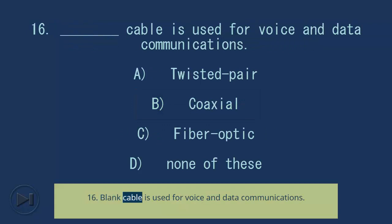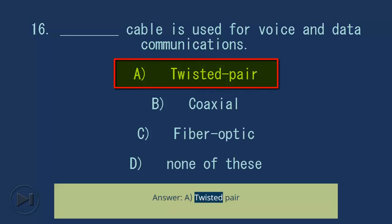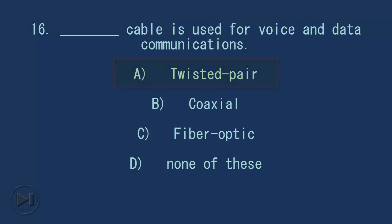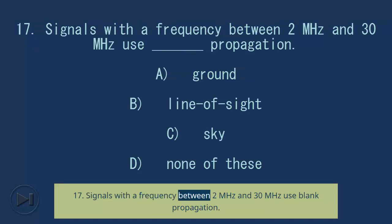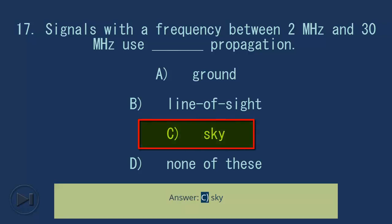Question 16: Blank cable is used for voice and data communications. A) twisted pair, B) coaxial, C) fiber optic, D) none of these. Answer: A, twisted pair. Question 17: Signals with the frequency between 2 megahertz and 30 megahertz use blank propagation. A) ground, B) line of sight, C) sky, D) none of these. Answer: C, sky.